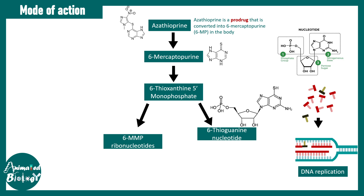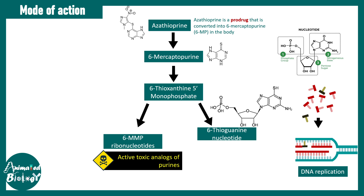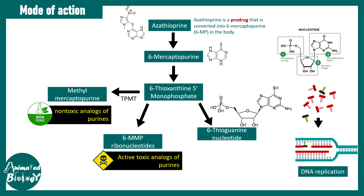The intermediate 6-thioxanthine 5-monophosphate can also be converted to 6-MMP ribonucleotides, which are active substances. Other derivatives can be formed with the enzyme TPMT (thioxanthine methyltransferase), producing non-toxic compounds. Thiouric acid is another non-toxic derivative formed via xanthine oxidase (XO), and both are eliminated properly by the kidneys.